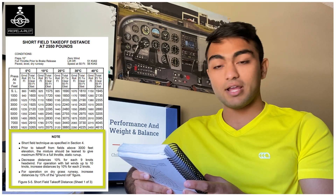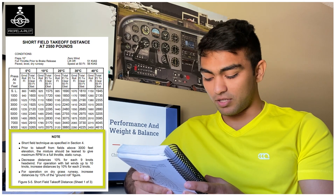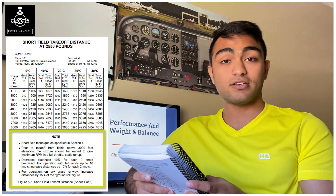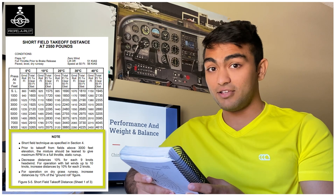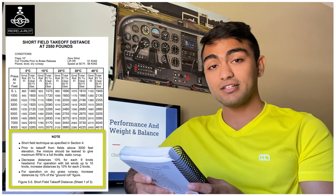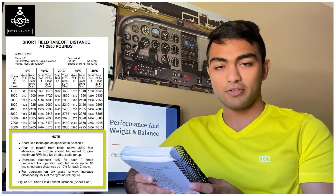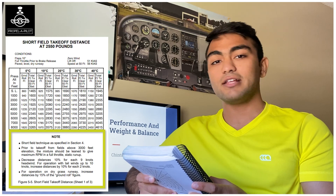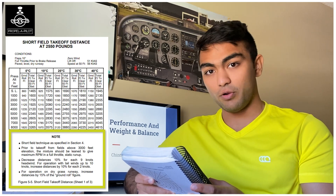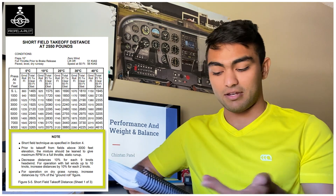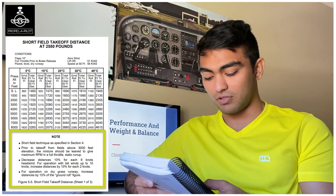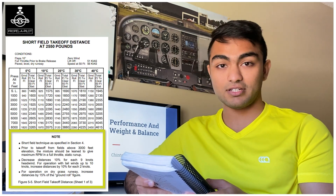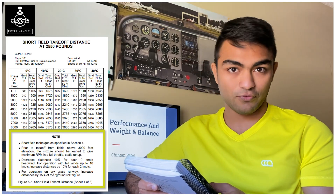For operations on a dry grass runway, increase distances by 15% of the ground roll figure. We've already discussed the effects of different kinds of runways on takeoff performance — a grass runway is going to increase the ground roll distance by at least 15%.